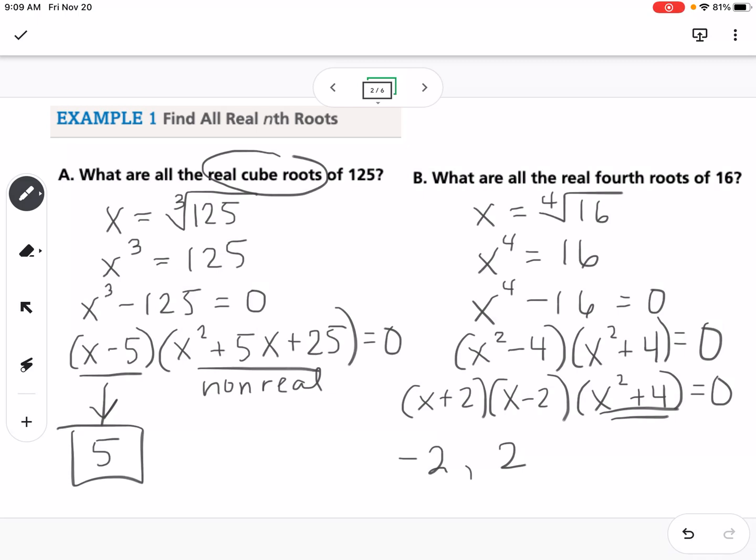It's going to be complex because if we solved it, x squared plus 4 subtracted the 4, did the square root, we would get 2i and negative 2i. And again, it's asking for the real fourth roots. So for this one, we would have a negative 2 and a positive 2.